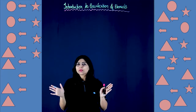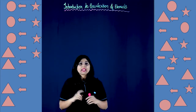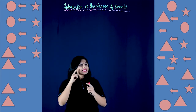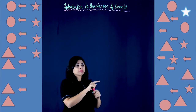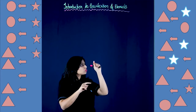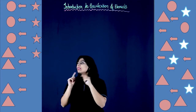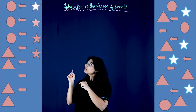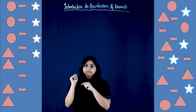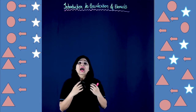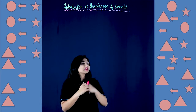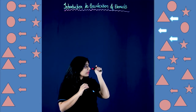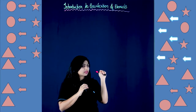Hi, look at these two pictures and let's count how many stars are present in this picture: 1, 2, 3, 4. And in this picture: 1, 2, 3, 4. How many arrows are present in this picture? 1, 2, 3, 4, 5, 6, 7. How many arrows are present in this picture? 1, 2, 3, 4, 5, 6, 7.